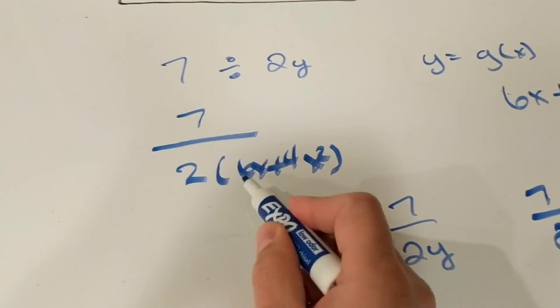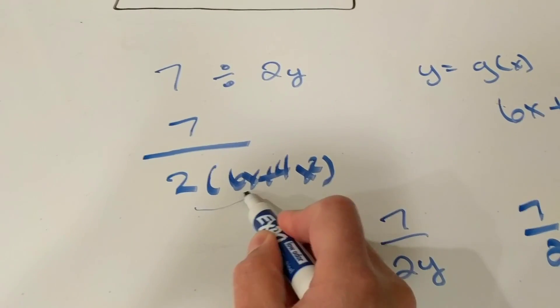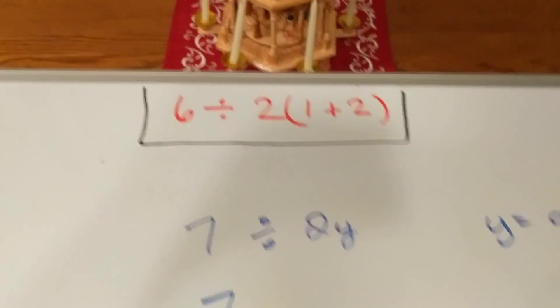Now, if you notice, there's parentheses here because the 2 is associated with that function. Which brings us to this problem right here.